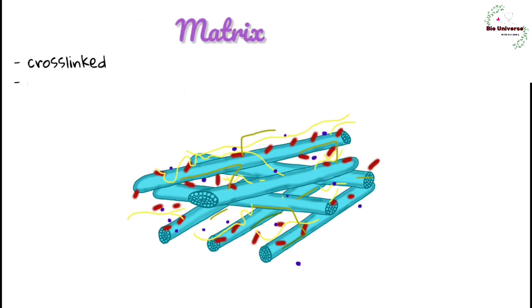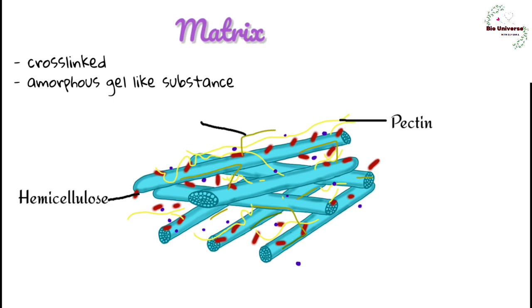Matrix is highly cross-linked amorphous gel-like ground substance of cell wall. It consists of water, pectin, hemicellulose, lipids and proteins. Pectin functions in cross-linking different substances. It also determines hydration of cell wall, its elasticity, growth and orientation of microfibrils.